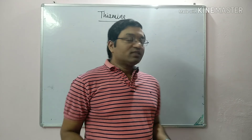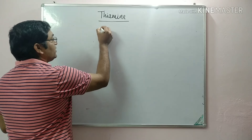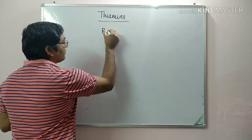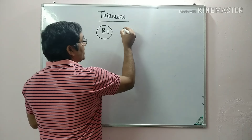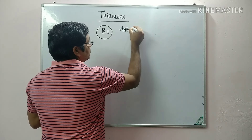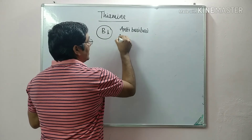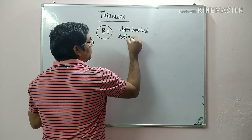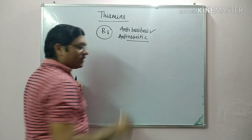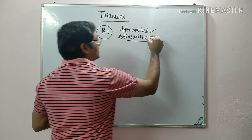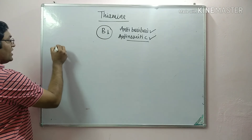Good morning friends. Today we will discuss an important vitamin — Thiamine. This is the first vitamin to be discovered in the vitamin B complex, that's why it is named B1. It is also known as anti-beriberi vitamin and anti-neuritic vitamin because it helps in prevention of beriberi and also prevents peripheral neuropathy.